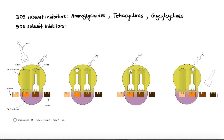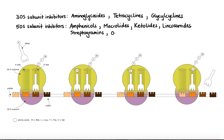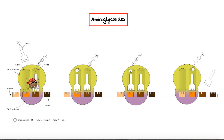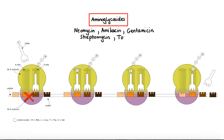Classes of antibiotics that bind to the 50S subunit include amphenicols, macrolides, ketolides, lincosamides, streptogramins, and oxazolidinones. Aminoglycosides work primarily by binding to an area adjacent to the decoding site in the 30S subunit of the ribosome, where they interfere with the initiation of protein synthesis and cause misreading of the genetic code. This ultimately leads to either synthesis of non-functional proteins or premature termination of protein synthesis. Examples of drugs in this class are neomycin, amikacin, gentamicin, streptomycin, and tobramycin. Use of aminoglycosides has been associated with serious toxicities including ototoxicity, nephrotoxicity, and in rare instances neuromuscular blockade.